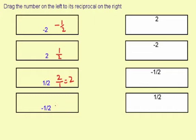Negative 1 half, I'll flip that over, negative 2 over 1, which reduces to negative 2. And again, negative 1 half times negative 2 is positive 1.